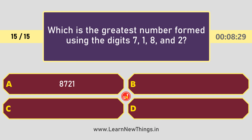Which is the greatest number formed using the digits 7, 1, 8, and 2? The answer is 8,721.